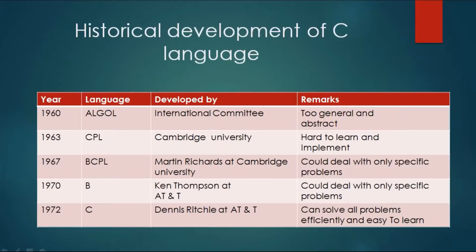Then we had a language called BCPL, developed in 1967 by Martin Richards at Cambridge University, but it was dealing with some specific problems only. Then we had a language called B in 1970, developed by Ken Thomson at AT&T. It was again dealing with only some specific problems. So there was a need for a language that could be used for all purposes. So in 1972, Dennis Ritchie at AT&T developed the language called C, which can solve all problems efficiently and is easy to learn.